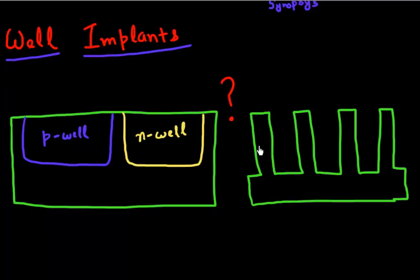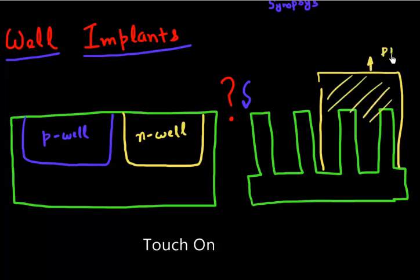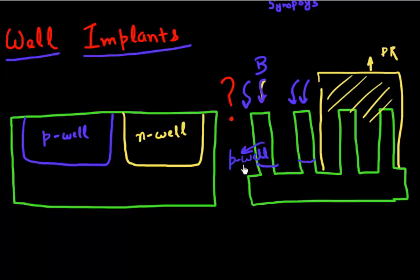The answer is that you can do it two ways. After we are done defining these fins, we can come back and cover the fins where we want to make our P-well with photoresist. Then I can do an implant step. So I want to make a P-well over here so I can do this boron implant and define my P-well region. But is this the only way?